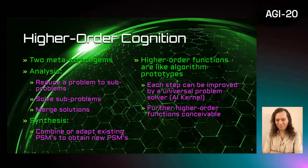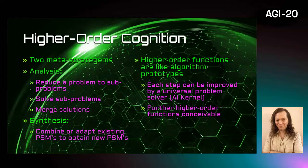Higher-order cognition is an interesting aspect of the Alpha and Omega architectures. It consists of two basic strategies corresponding to a kind of reflective cognition: Analysis, which divides a problem into known problems and then solves those problems and merges them back again; and Synthesis, which recombines and modifies existing problem-solving methods, producing new problem-solving methods.